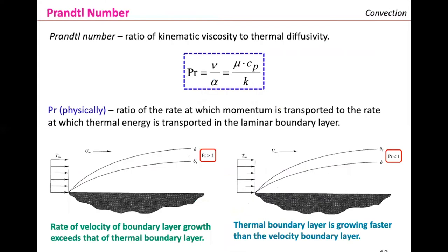Another important dimensionless number in convection is the Prandtl number. The Prandtl helps us compare the ratio between kinematic viscosity in the numerator to thermal diffusivity in the denominator. Physically, the Prandtl number is the ratio of the rate at which momentum is transported to the rate at which thermal energy is transported in the laminar boundary layer. Again, we are comparing two phenomena with the Prandtl number.